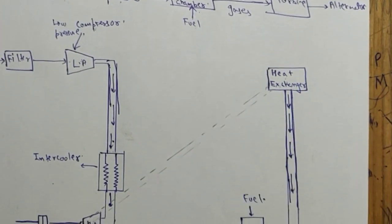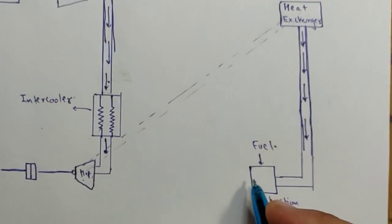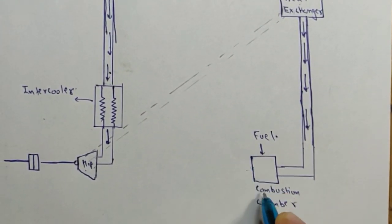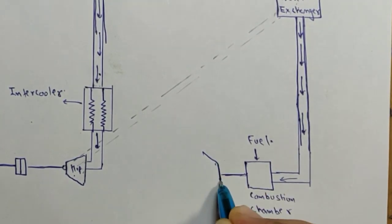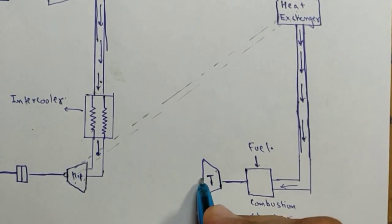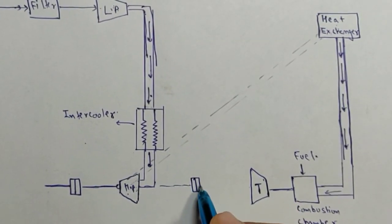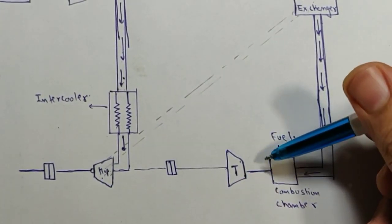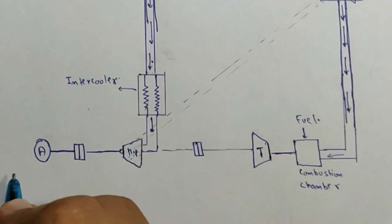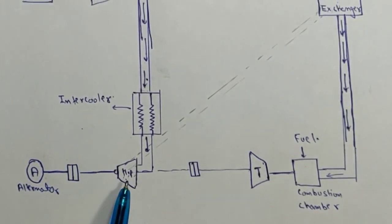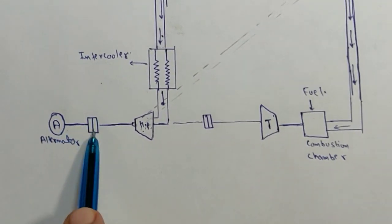The heat exchanger and two compressors are accessories used to improve the efficiency of the cycle. After the gases have entered the combustion chamber, they are sent to a turbine — this is our turbine. This turbine is coupled with the compressor, so the energy produced in the turbine is also used to drive the compressors. This turbine is coupled with the compressor, which in turn is coupled with the alternator. Some of the work produced in the turbine is used to drive the compressor and the remaining work is used to run the alternator, which produces our electricity.